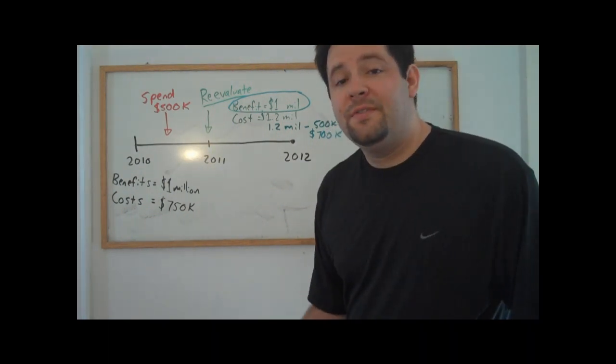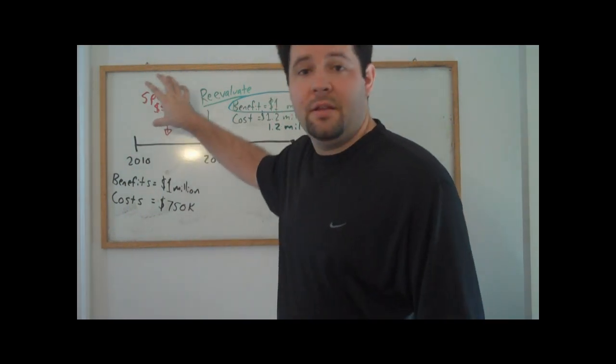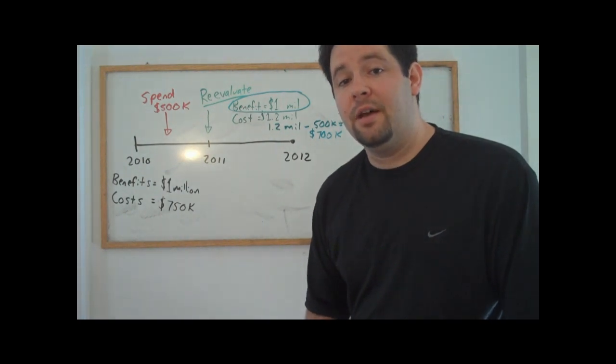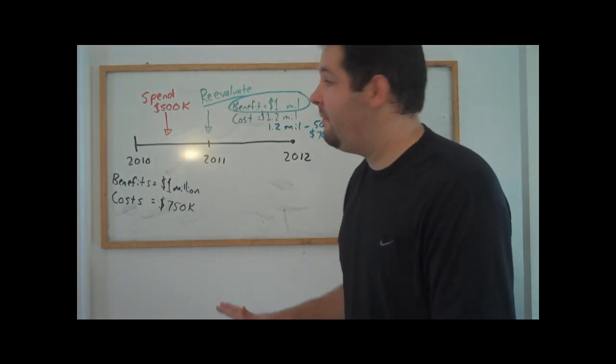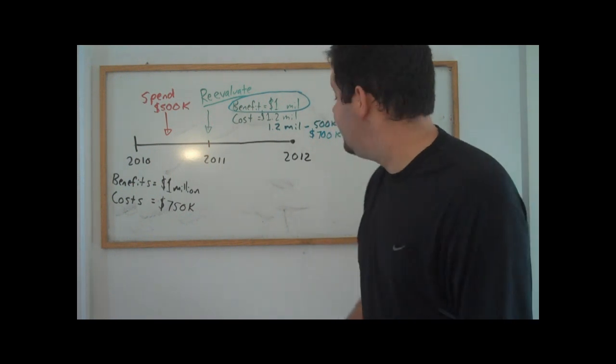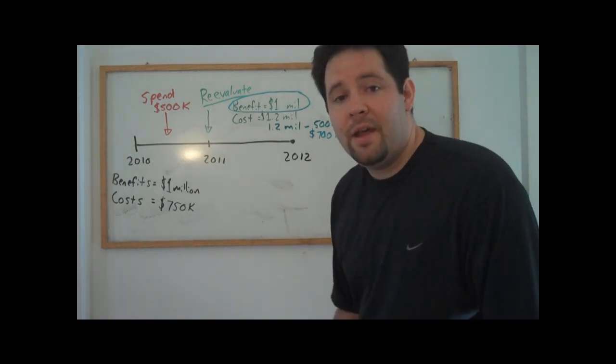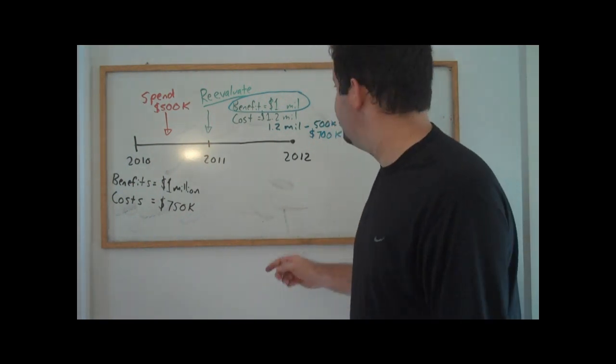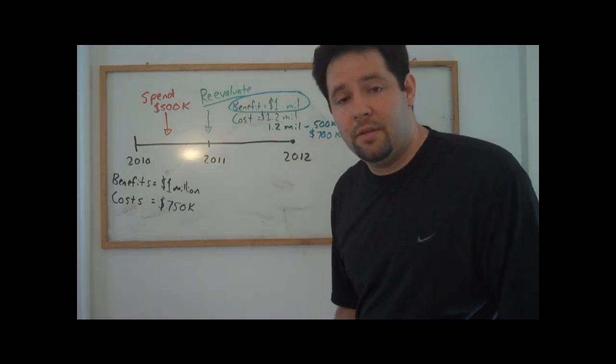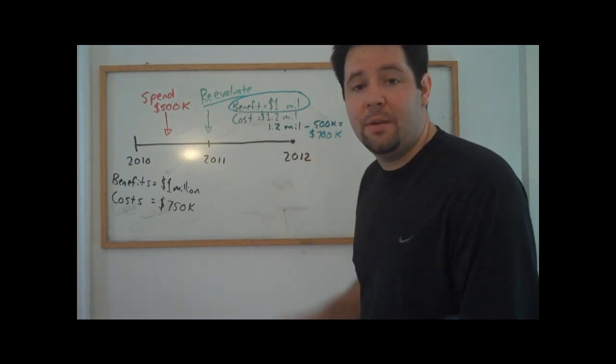But once we've sunk the $500,000 in the first year, we're starting in the hole $500,000. We're getting no benefit at this point, and so we're starting with a loss of $500,000. It's much better if we could recover some of those losses by completing the project and only losing $200,000. And that's actually what ends up happening here.